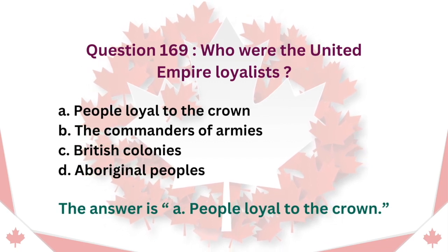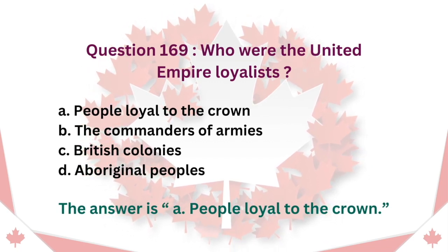Question 169: Who were the United Empire Loyalists? A. People loyal to the Crown. B. The commanders of armies. C. British colonies. D. Aboriginal peoples. The answer is A. People loyal to the Crown.